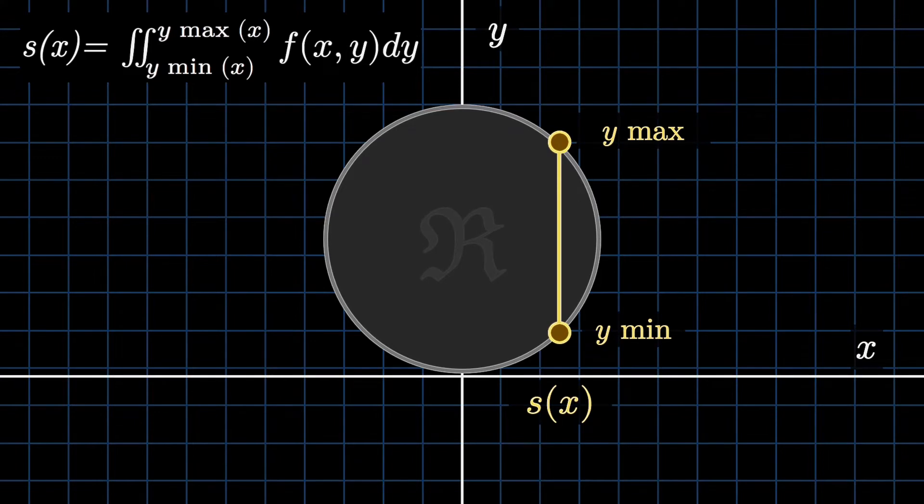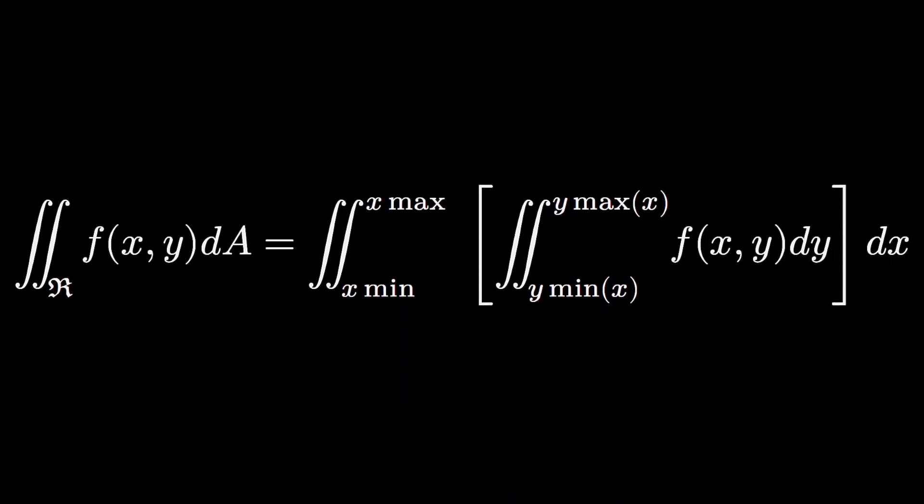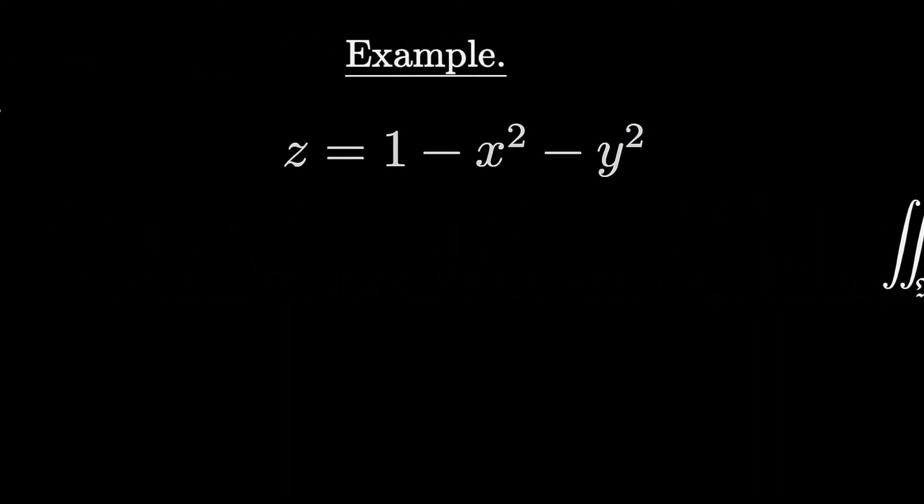So if we combine everything, we get this whole enormous equation. Now it should make a little sense to you at least. We first calculated the x component, then we iterated the entire thing. So let's do an example to help things out.